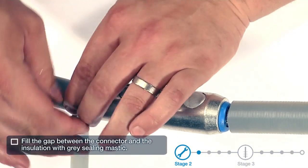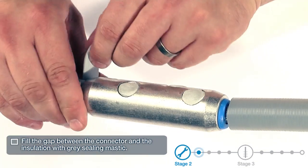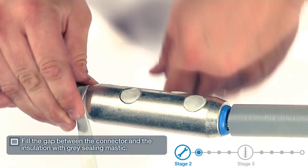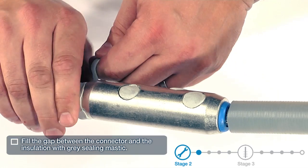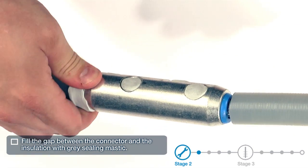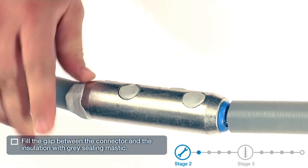Fill the gap between the connector and the insulation with grey sealing mastic.